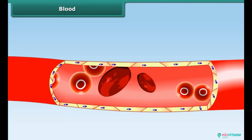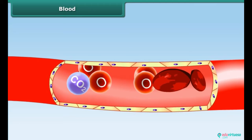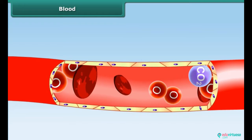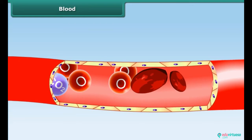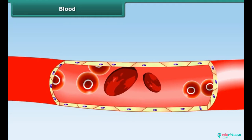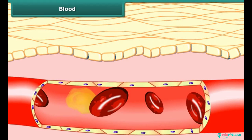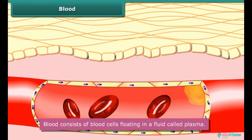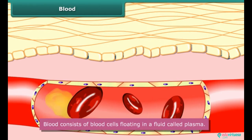Blood is a fluid that is essential for our survival. It carries oxygen and nutrients to body parts. It also carries waste away from body parts for removal.